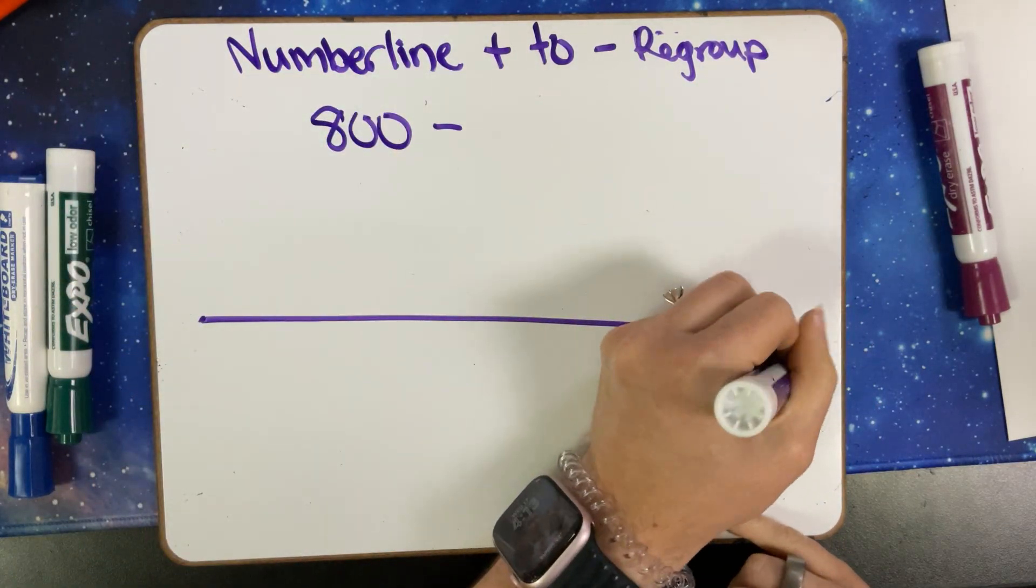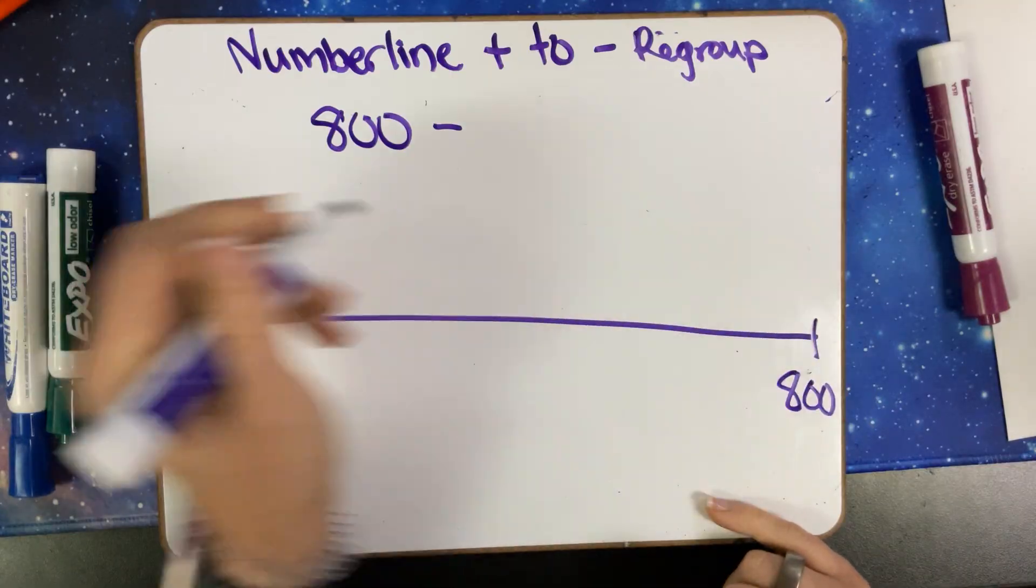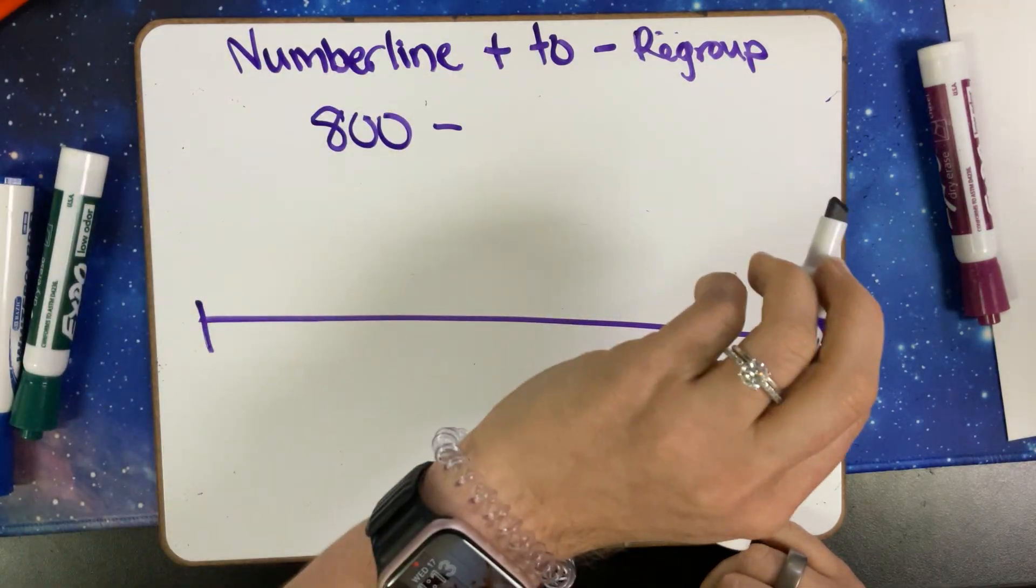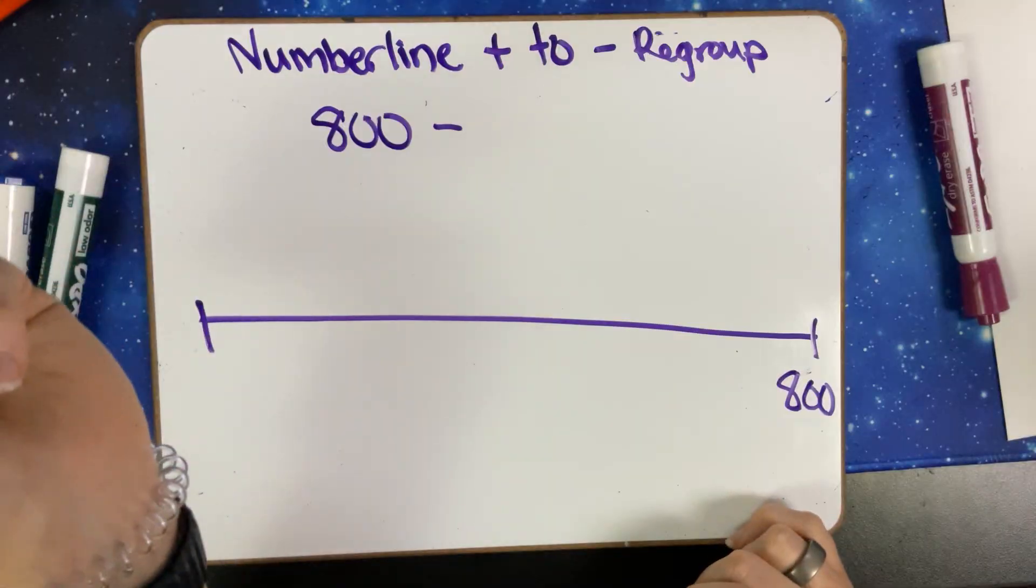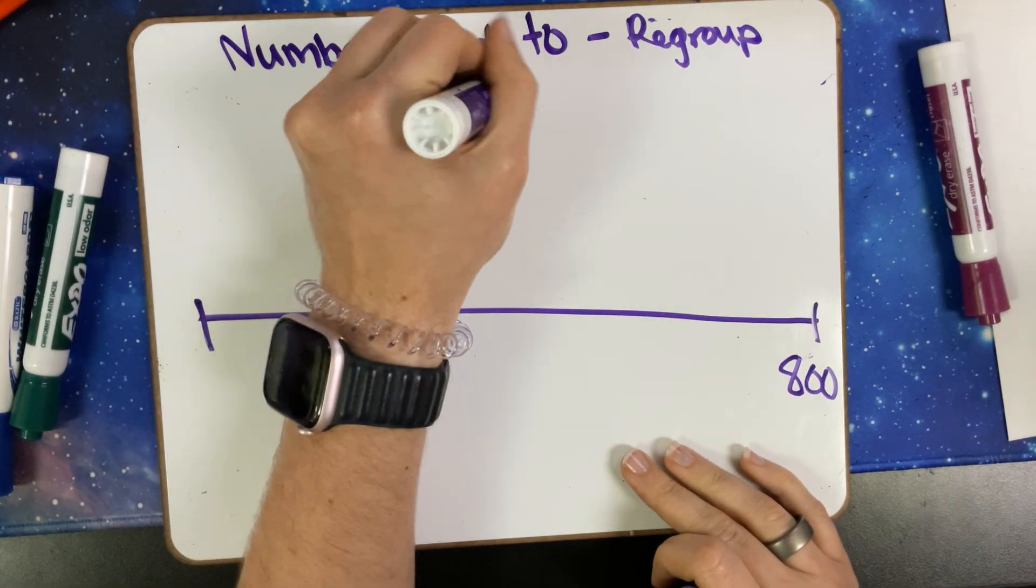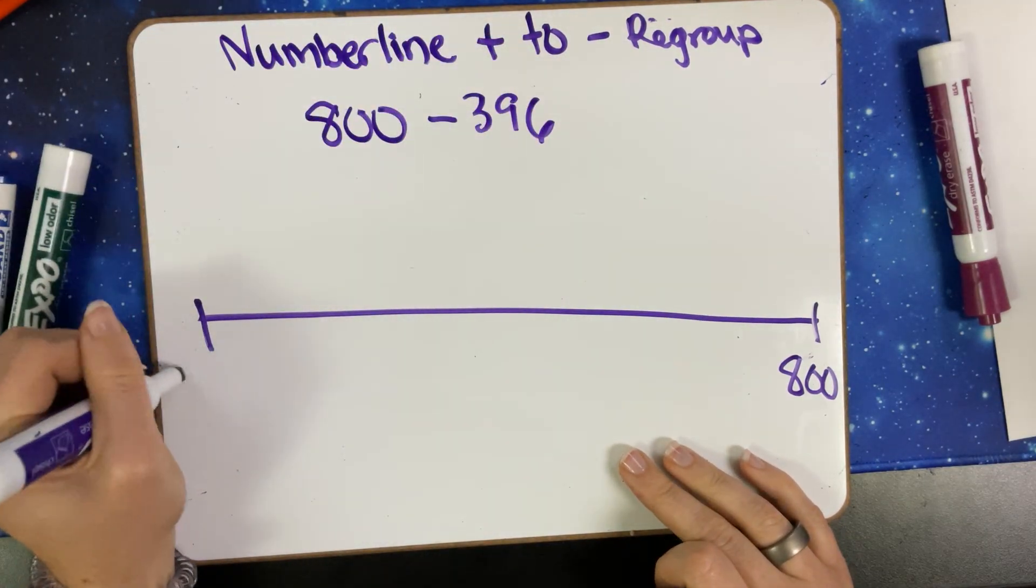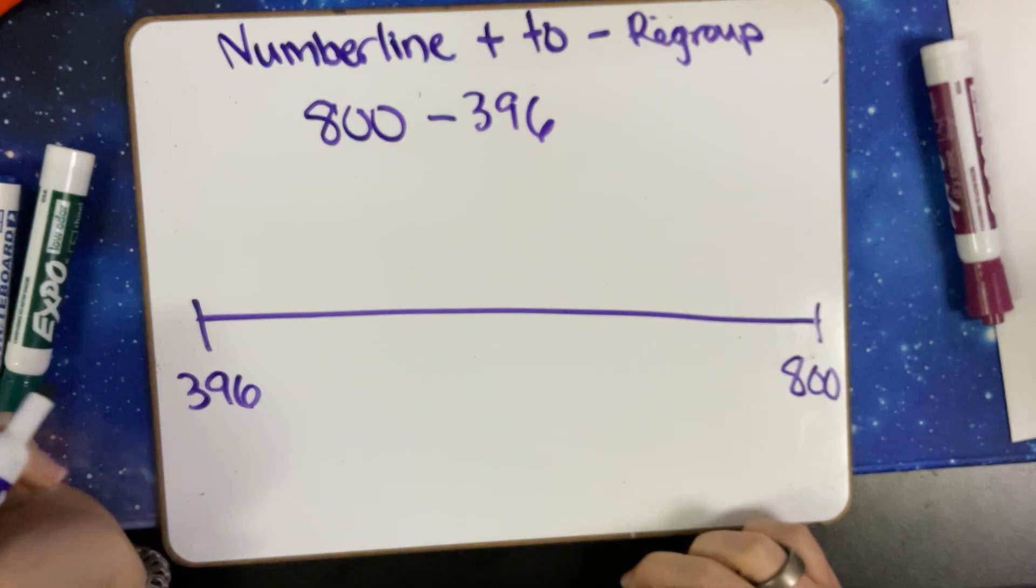So let's start with 800. It's going to be on the right side of our number line. And then on the other side, let's have 396. So we'll put 396 on the left side of the number line.